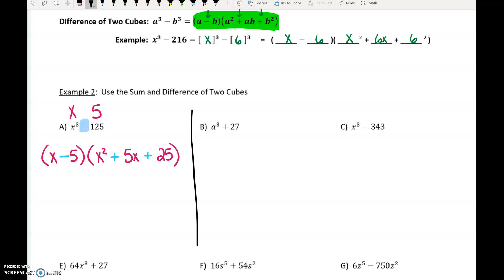Let's try example B. A cubed, that's the perfect cube of A. What is 27 the perfect cube of? 3. So I've got A, 3, A squared, 3A, and 9. I started with plus, so my first symbol is plus. The next symbol is the opposite of that. The last symbol is always plus.